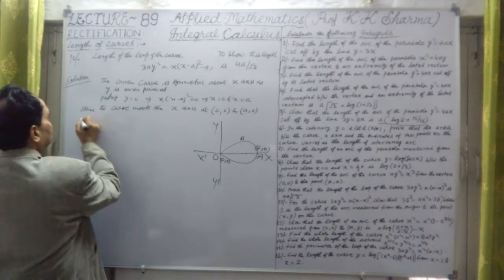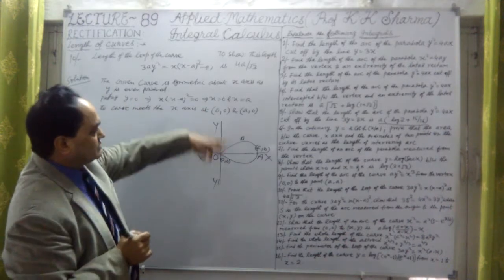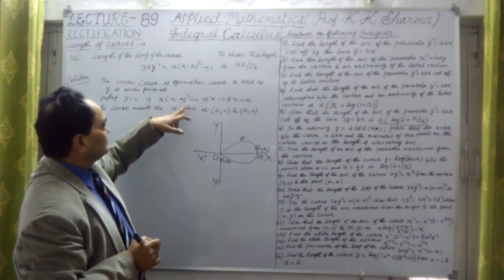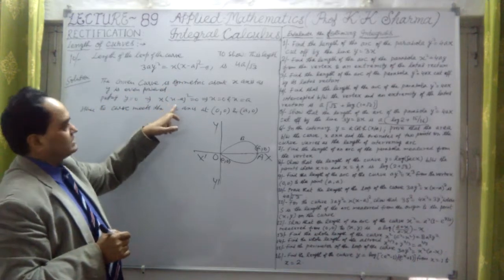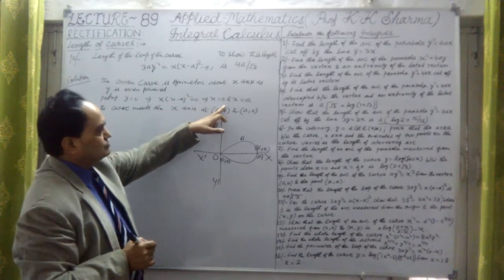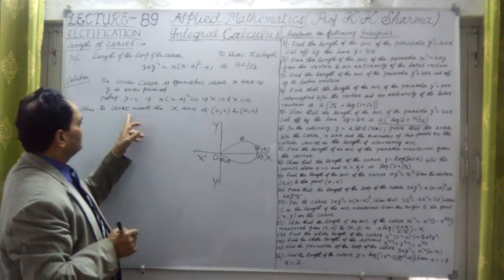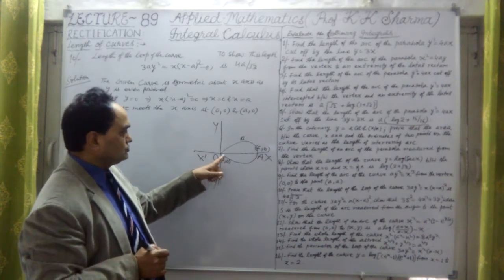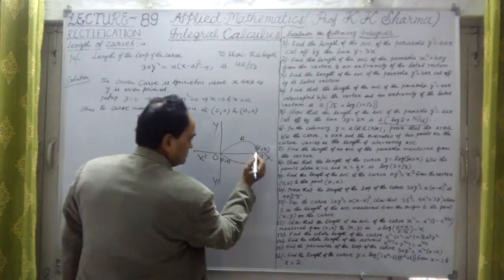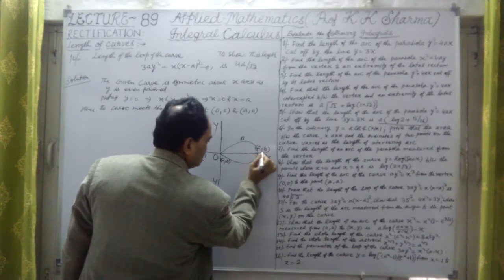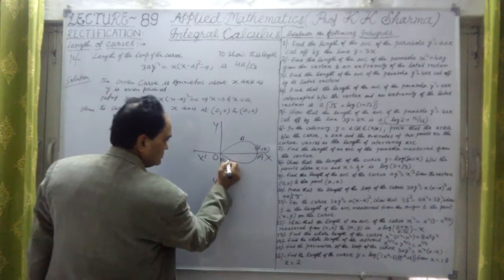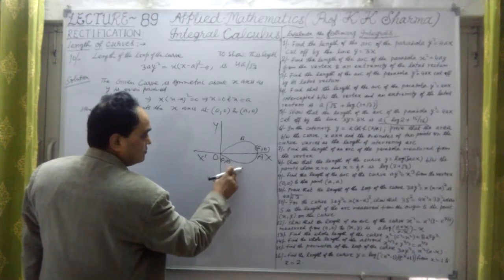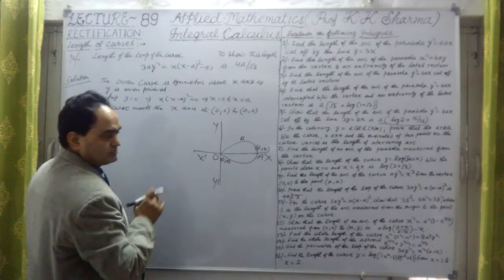The given curve 3ay² = x(x-a)² is symmetric about the x-axis since y appears to an even power. Putting y = 0: x(x-a)² = 0, giving x = 0 and x = a. So the curve meets the x-axis at points (0,0) and (a,0). The limits of integration will be x = 0 to x = a.